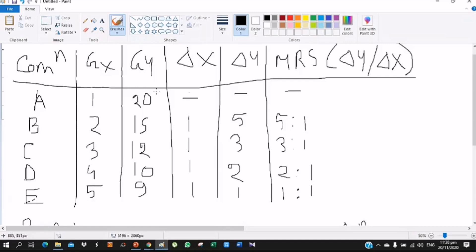For Y good there are 20, 15, 12, 10, and 9 units.